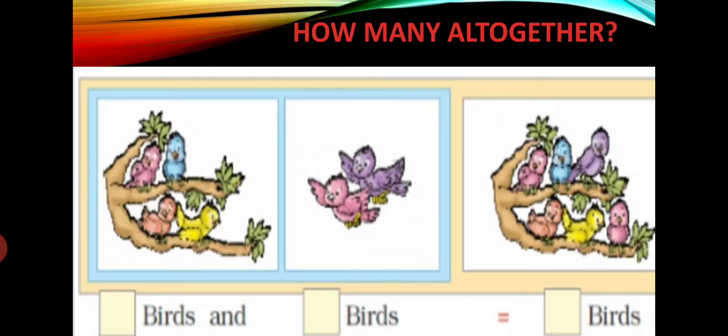Next. You have to count the number of birds sitting on the tree. How many birds are there? 1, 2, 3, 4. 4 birds are sitting on the tree. In the next picture we are seeing 2 more birds are coming to them. So 4 birds and 2 birds that is equal to — now count the number of birds sitting on the tree: 1, 2, 3, 4, 5, 6. So 6 birds.